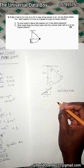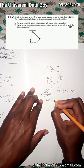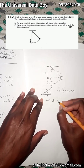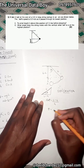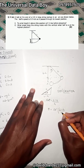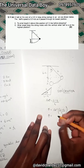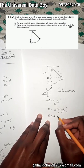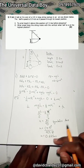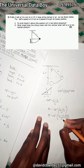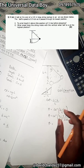Using SOHCAHTOA: we have the adjacent side (l minus h) and the hypotenuse (l). So we use cosine: cos θ = (l minus h) / l. Taking the inverse cosine of both sides: θ = cos⁻¹((l minus h) / l). This is our symbolic answer for theta. Now substituting: l = 2.0 m and h = 0.625 m.